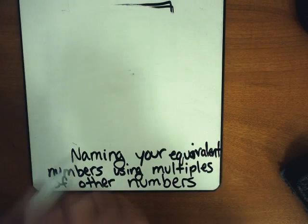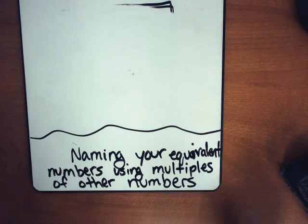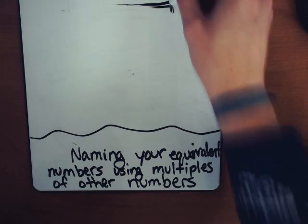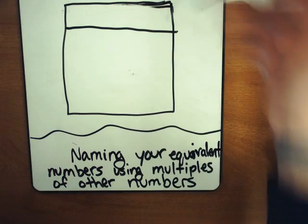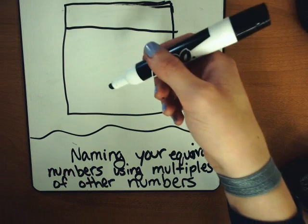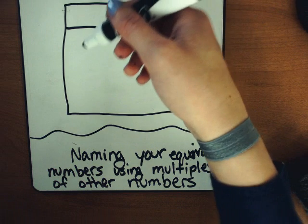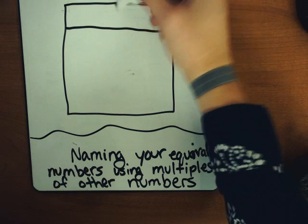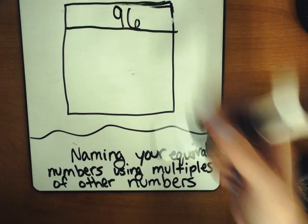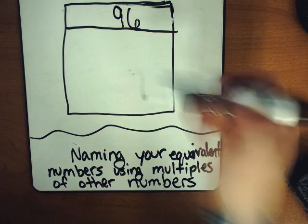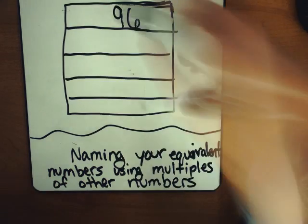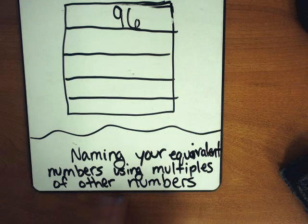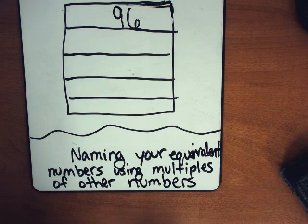I want you to follow this rule that we talked about, and draw another name collection box. And this time, let's make this name collection box different names for 96. So I want you to go ahead and draw a name collection box for 96 right here, naming your equivalent numbers using multiples of other numbers.